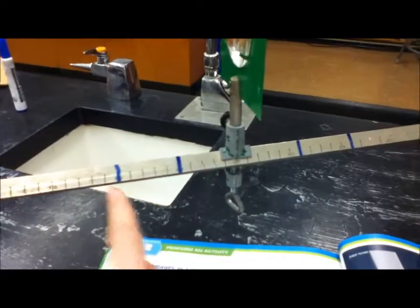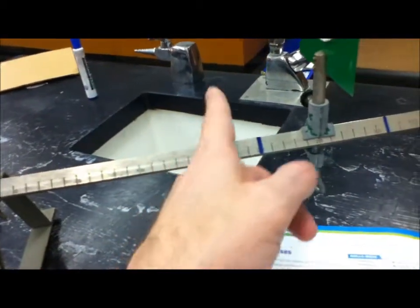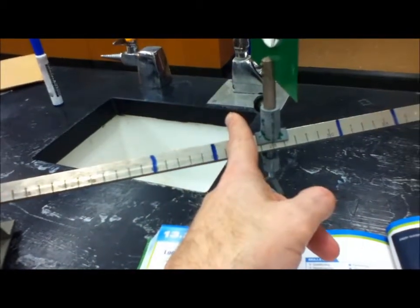so that's here and here. So what our job is now is to take that candle and put it at different positions: outside of 2F, on 2F, between 2F and F, on F, between F and the lens,